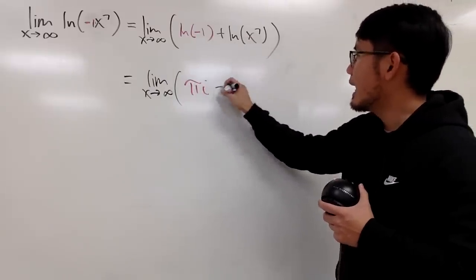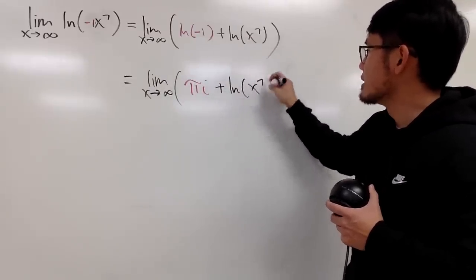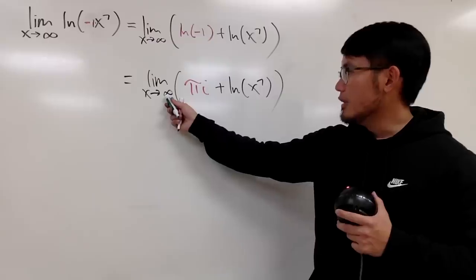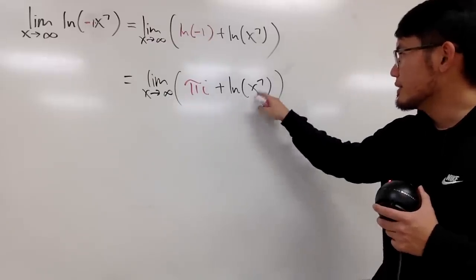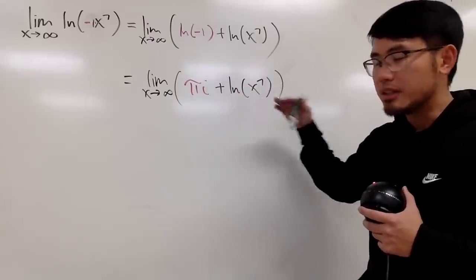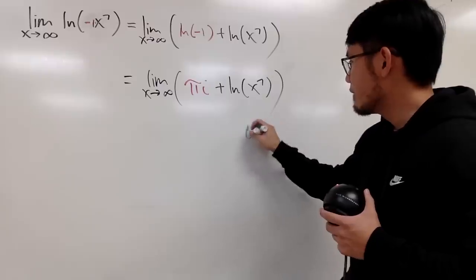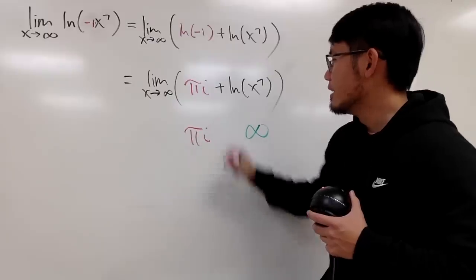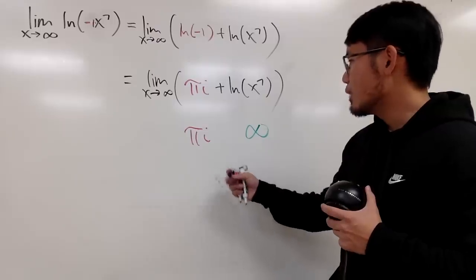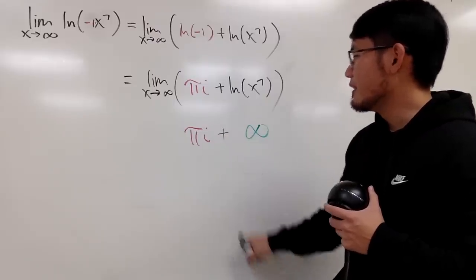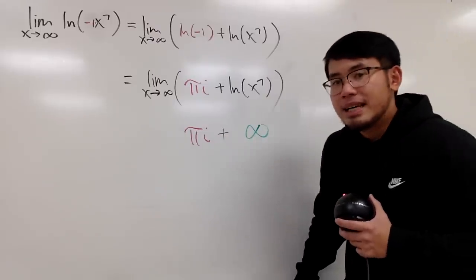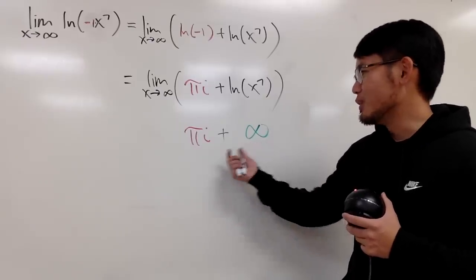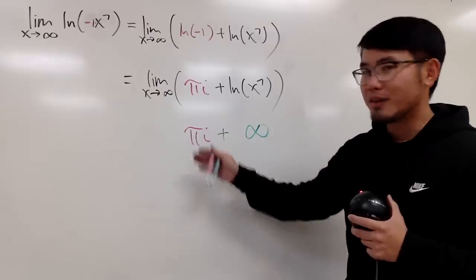And we add ln of x to the seventh power — here is the trouble. If I put infinity in here, infinity to the seventh power is still infinity, and ln of infinity is still infinity. So here we have infinity, but here I have πi, which is an imaginary number. And when you have πi plus infinity, you cannot do this — you cannot add infinity with πi.